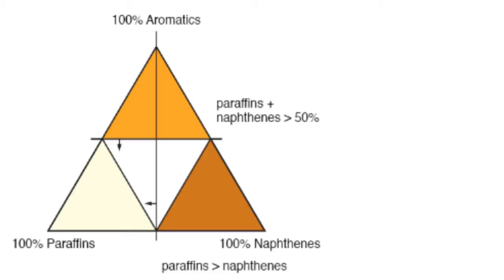The vertical line separates the triangle into two areas. To the left of that vertical line, paraffin content is greater than naphthene content everywhere. So with these two boundary lines — one horizontal, one vertical — we have established a region where paraffins and naphthenes together are greater than 50% and paraffin content is greater than naphthenes.